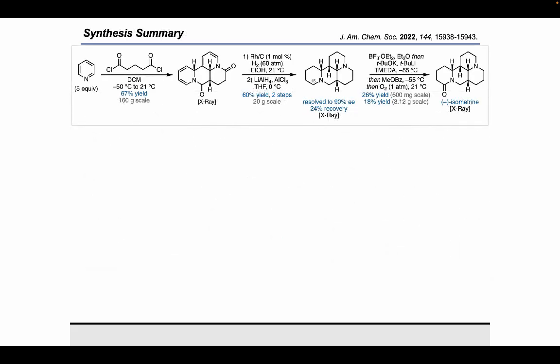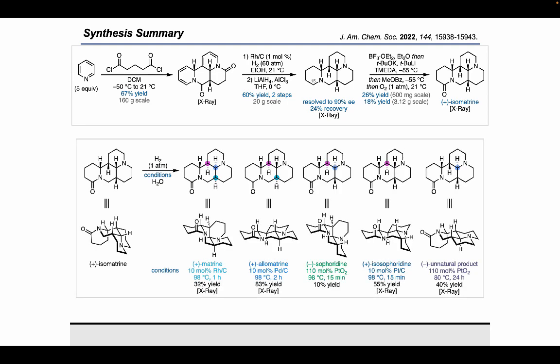So in summary, we've been able to cyclize pyridine and glutaral chloride on a mole scale to access this tetracycle, which could then do a complete reduction followed by a purification via recrystallization and then a tartrate resolution to access the diamine in 90% EE. We could then perform a single step oxidation to selectively access isometrine in a 26% yield on a 600mg scale. From there, we were able to selectively isomerize isometrine into four additional natural products and one unnatural product.